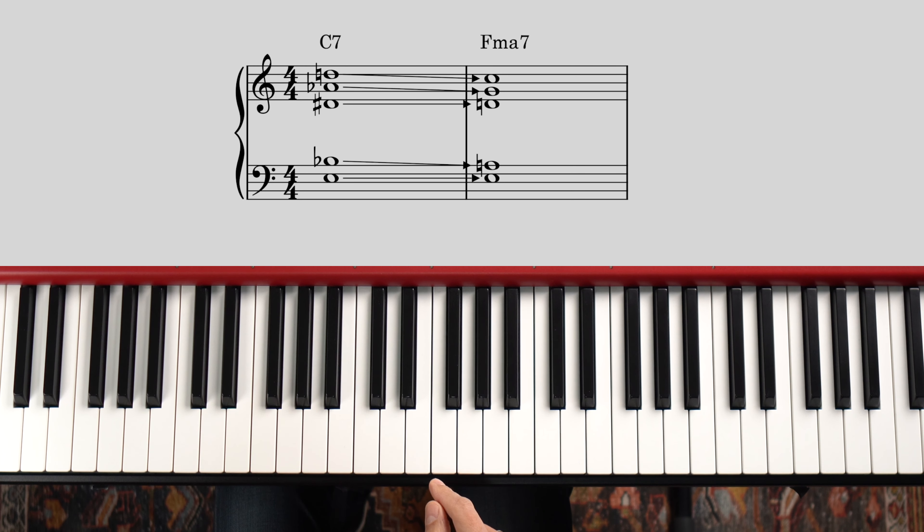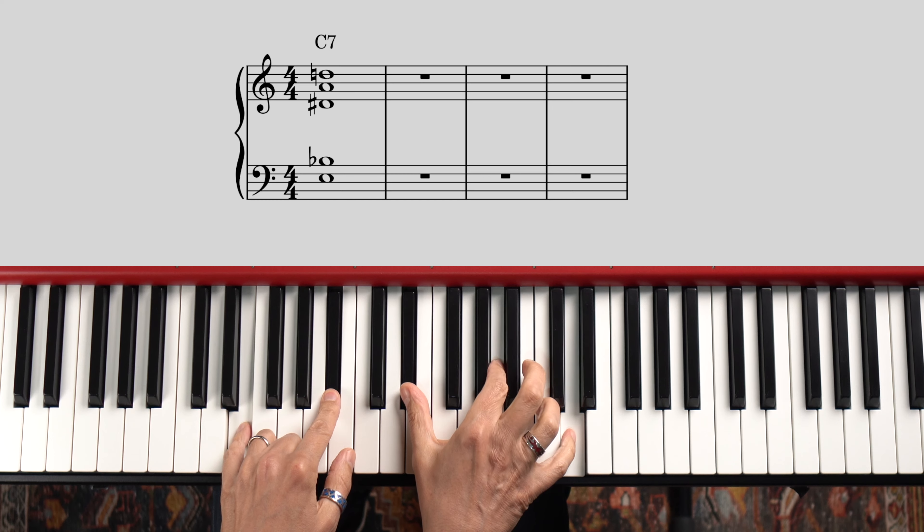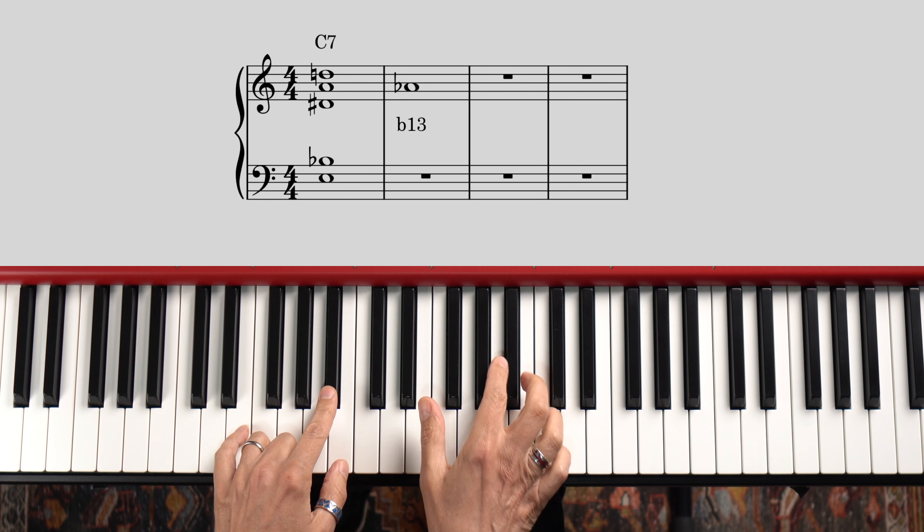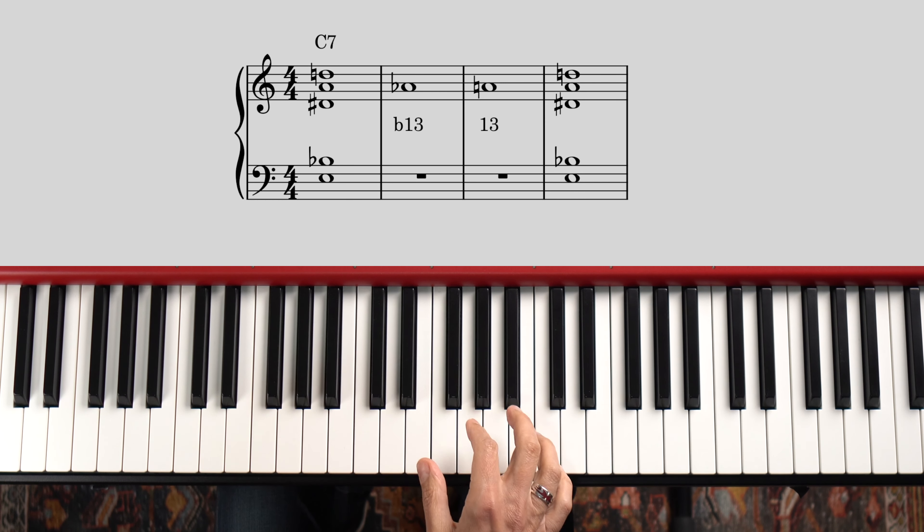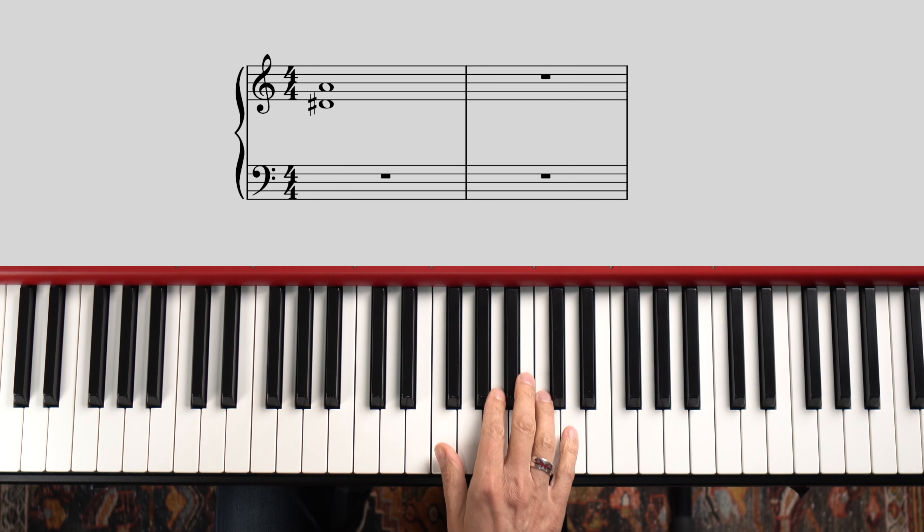Now check this out. Playing the 13 instead of the flat 13 in my illegal voicing gives me a cool variation. Flat 13, 13. My right hand shape now consists of an augmented fourth first, and then a perfect fourth.